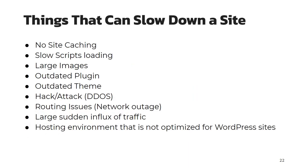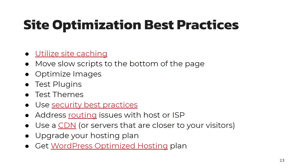Some things that can slow down your site are lack of caching, slow scripts loading, large images, outdated plugins, outdated themes, a hack, attack, or DDoS, routing issues such as a network outage, a large sudden influx of traffic, or a hosting environment that is not optimized for WordPress sites. We're going to go over some site optimization best practices.